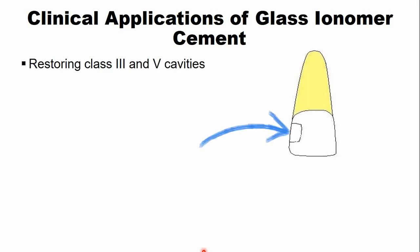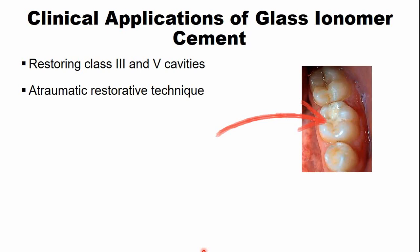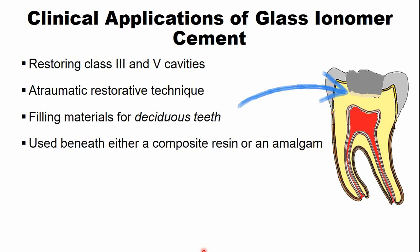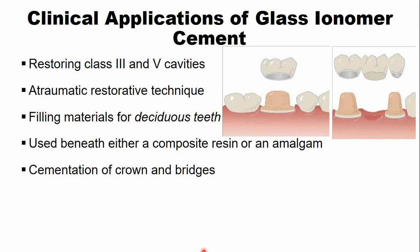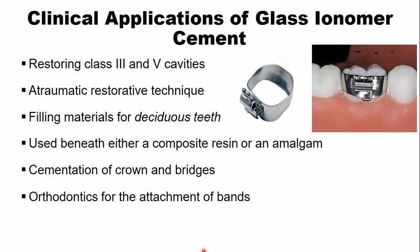Clinical applications of glass ionomer cement include: restoration of class 3 and class 5 cavities — since it is a brittle material, it is not used for restoration of the incisal edge or similar restorations. It is used for atraumatic restorative treatment and for filling of deciduous teeth. It is used beneath composite resin or amalgam restorations as a base or liner. It is also used for cementation of crowns and bridges, and during orthodontic treatment for attachment of molar bands.